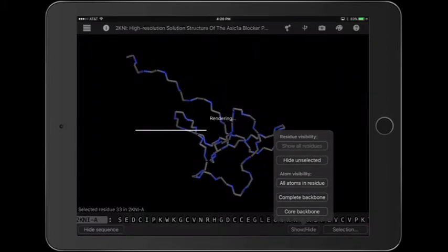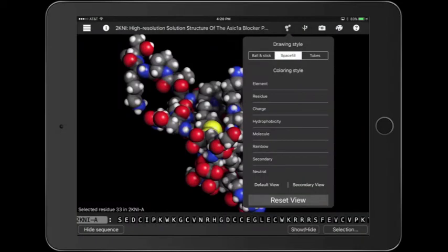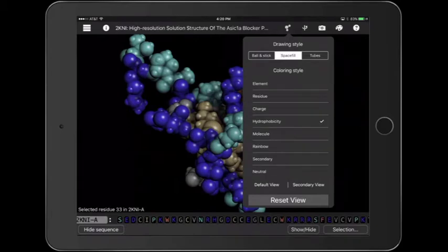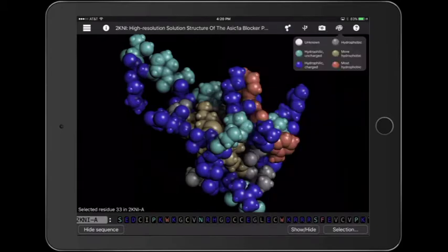To find examples of hydrophobic interactions, I begin by showing all the amino acid side chains and coloring by hydrophobicity. I can see from the color key that hydrophilic amino acids are colored light blue and dark blue, and the others are all hydrophobic: gray, gold, and brown.